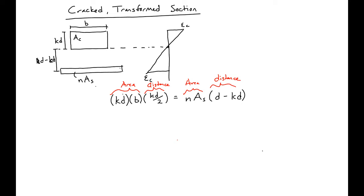You can see this is going to end up being a quadratic expression. If we simplify, we'll have B over 2 times KD squared plus N times A_s times KD minus N times A_s times D equal to 0.